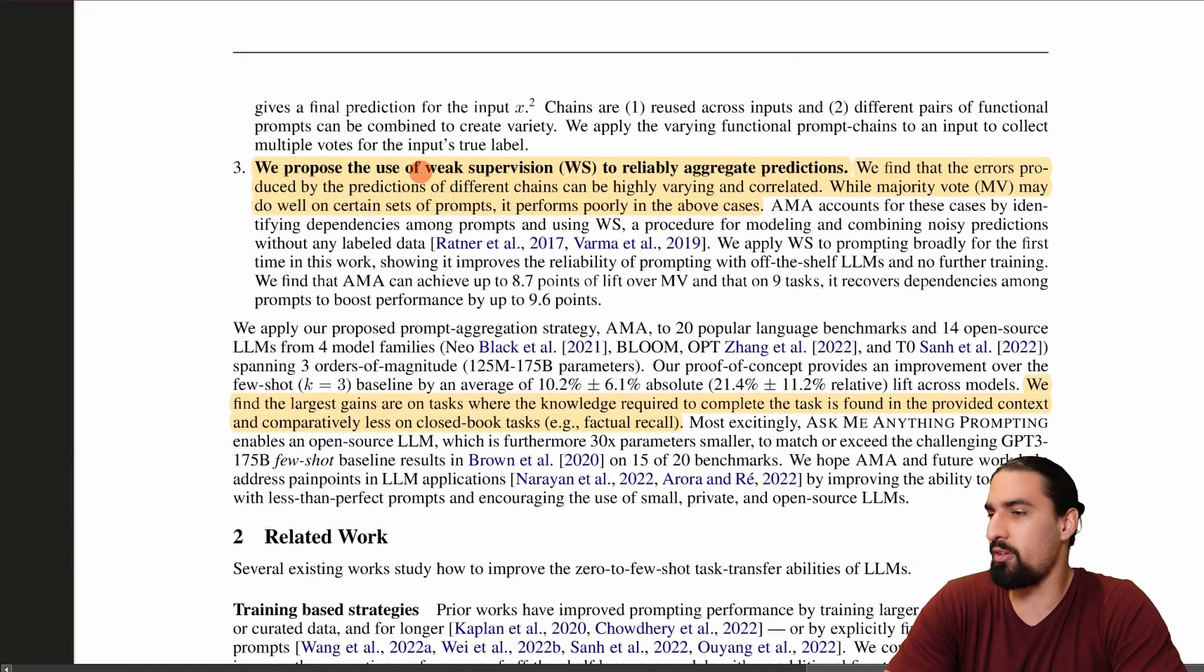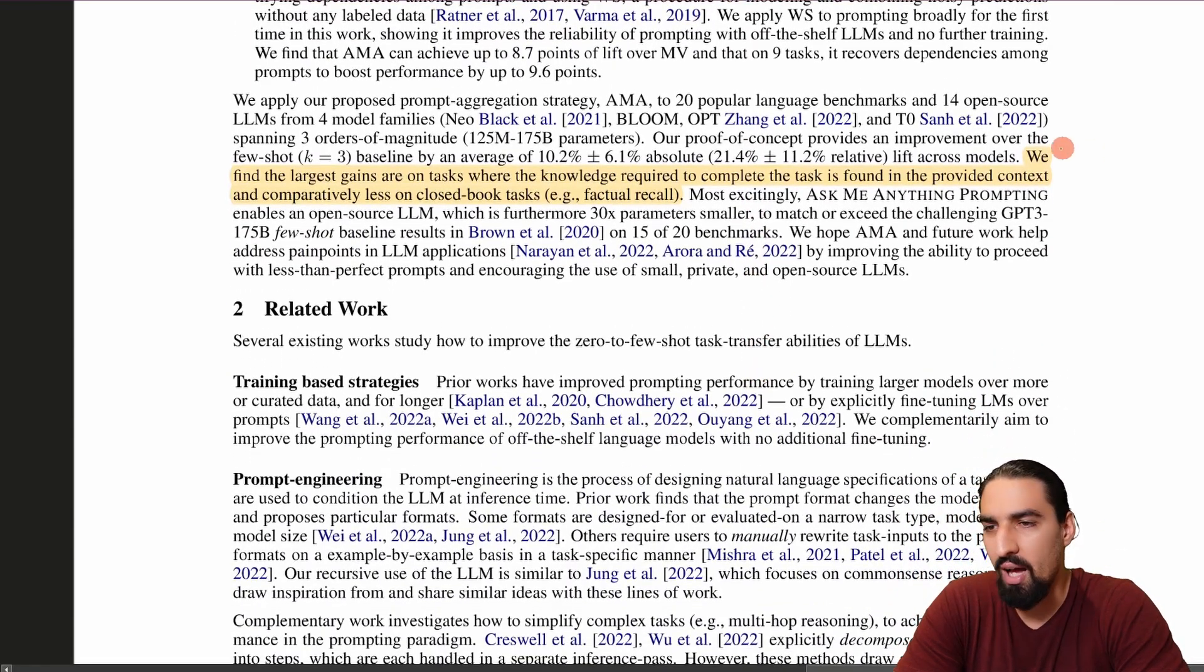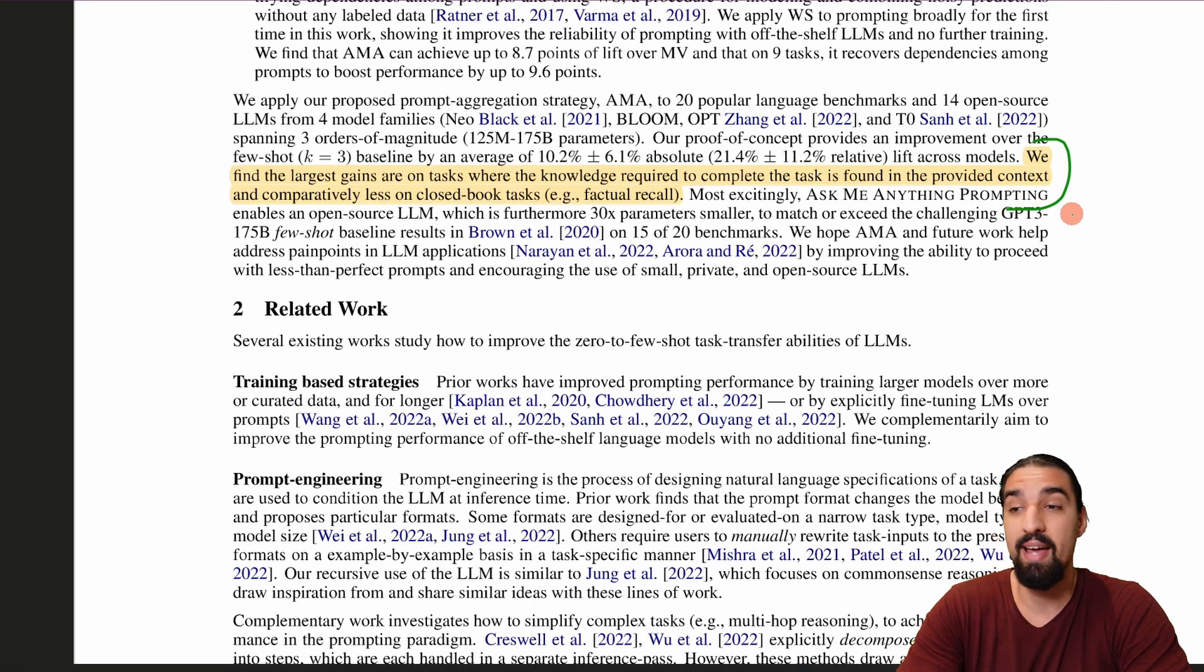As I said, so let me read this to you. So we propose the use of weak supervision to reliably aggregate predictions, we find that the errors produced by the predictions of different chains can be highly varying and correlated. And so while majority voting may do well on certain sets of prompts, it performs poorly in the above cases. And additionally worth pointing out is this is not a panacea. There are certain tasks that this method prefers.